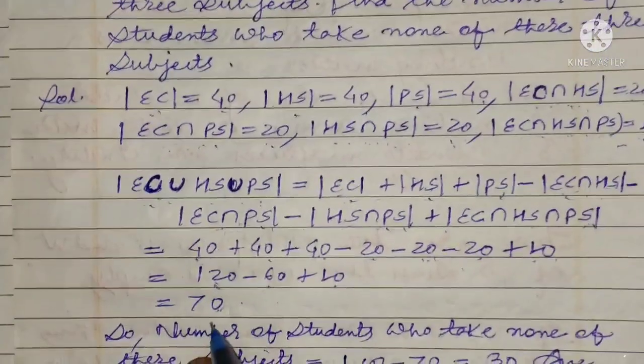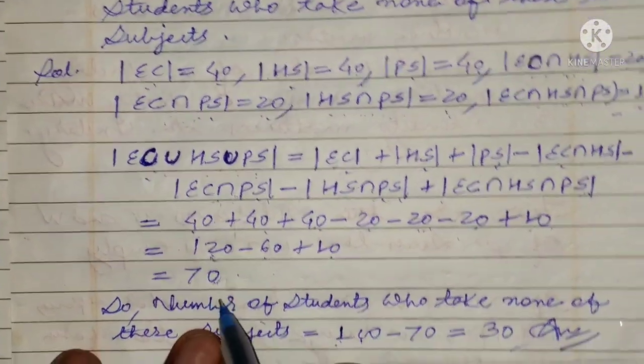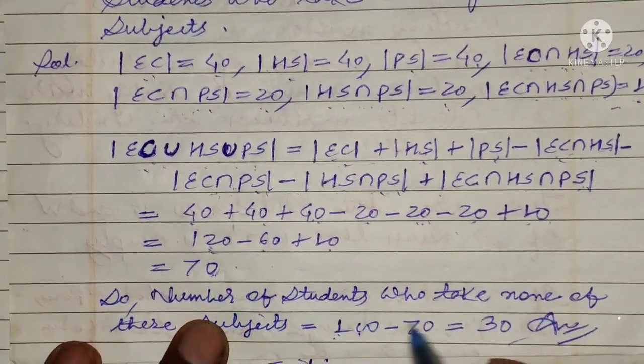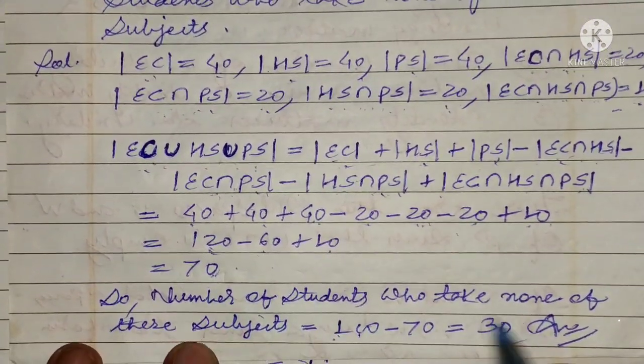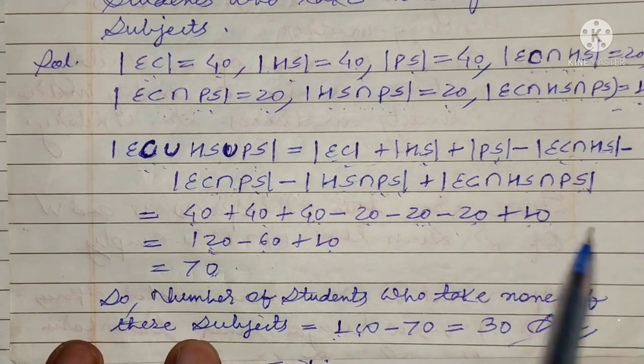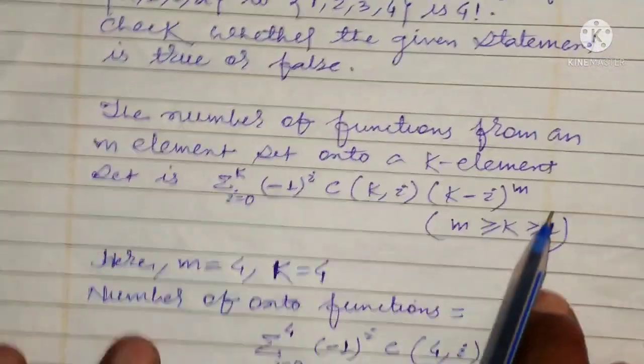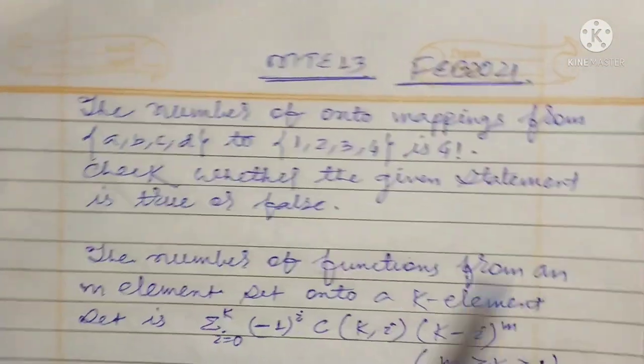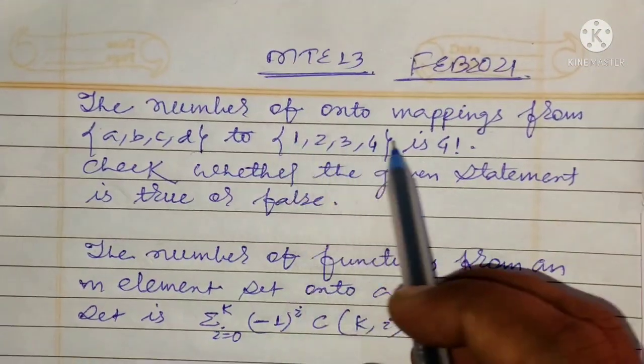Students who take none of the subjects is equal to 100 minus 70, which is equal to 30.